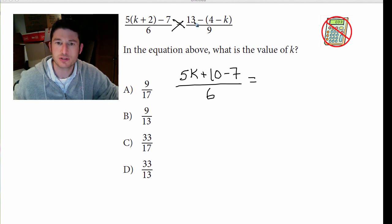That's going to be 13 minus 4, which is 9. And that's going to be a negative negative k, so that's just k all over 9. So sorry, I should have simplified this a little better. But 5k plus 3 all over 6 equals 9 plus k over 9.